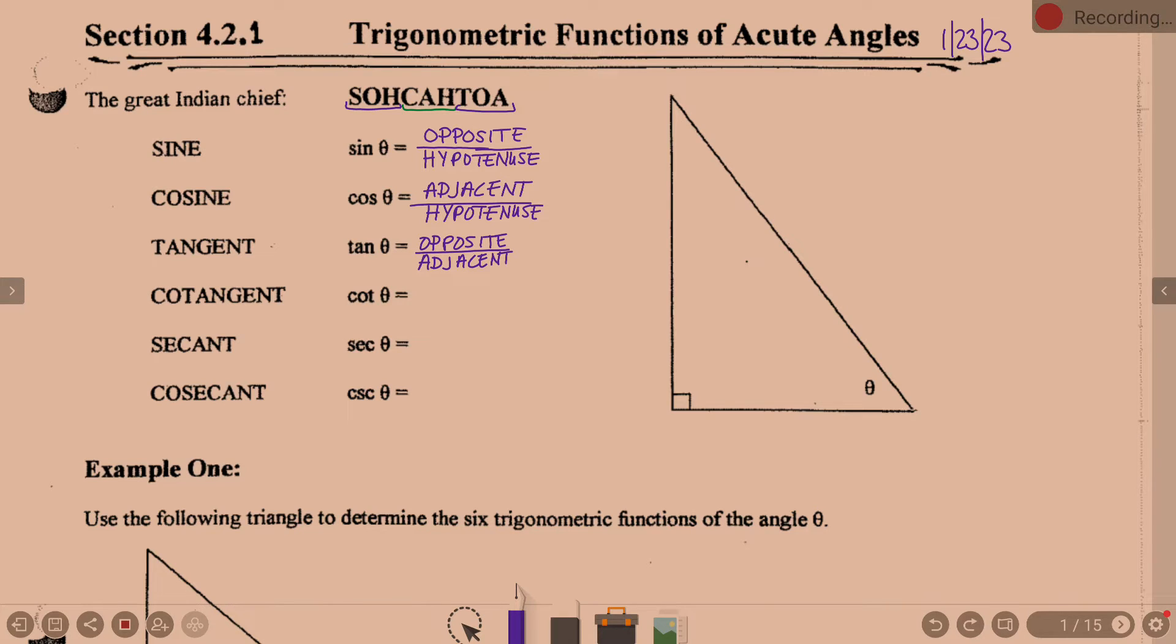So those are your three basic trig functions that you have to be aware of, right? Now, let's take a side moment. Let's go over here and talk about this triangle. We just talked about opposite hypotenuse, adjacent hypotenuse, opposite adjacent. Here's a right triangle. We have this theta angle over here. What do you know about these sides? What's what?